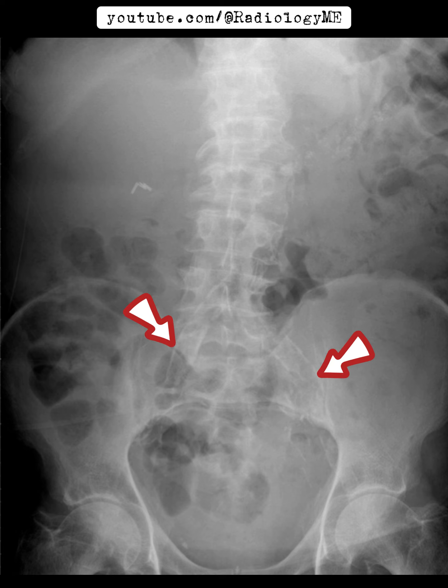Another crucial observation here is the dense aortic, iliac, and femoral calcification. This tells us the patient has significant vascular calcifications, possibly indicative of underlying atherosclerotic disease. Vascular calcifications like these are commonly seen in patients with long-standing risk factors such as diabetes, hypertension, or hypercholesterolemia.